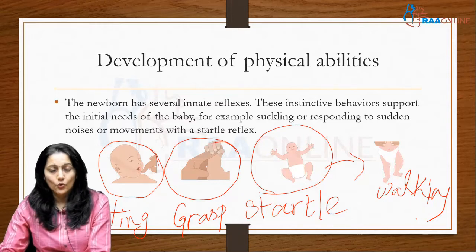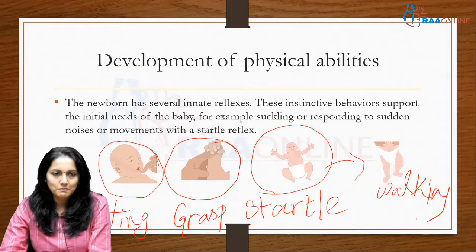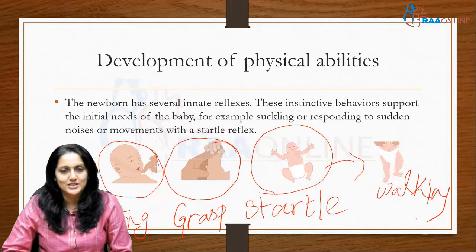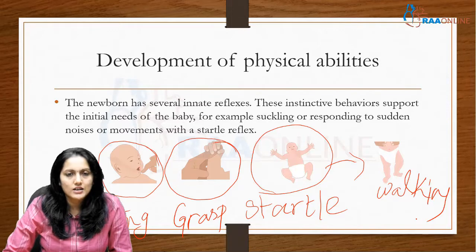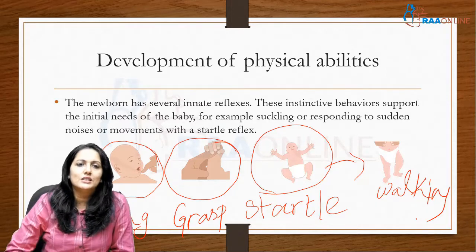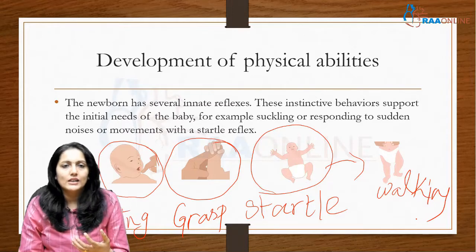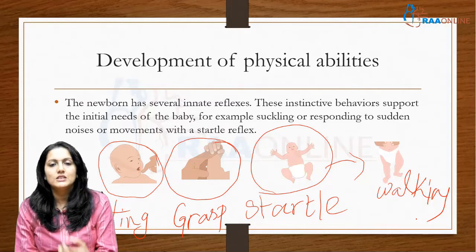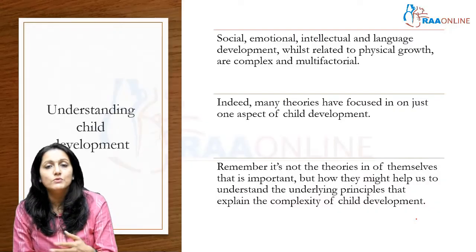This is very critical, because it is simply not something we can observe easily — but that doesn't mean the child is not growing socially, emotionally, or cognitively. Growth simultaneously occurs alongside these physical abilities. These physical abilities are the root cause, because through the five senses the child is able to develop cognitively, socially, behaviorally, and otherwise.